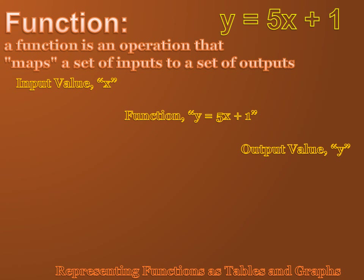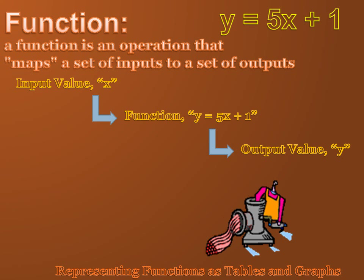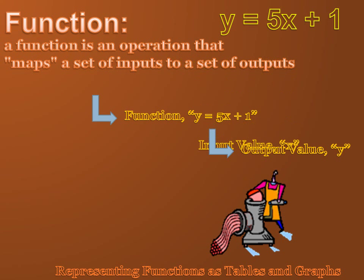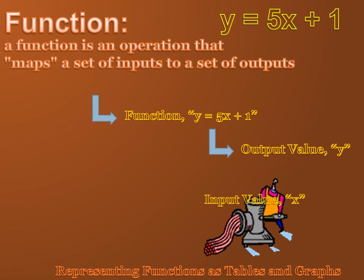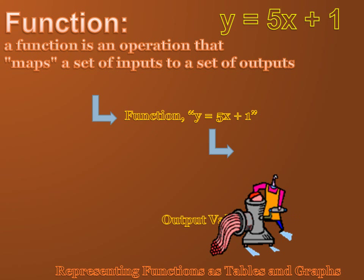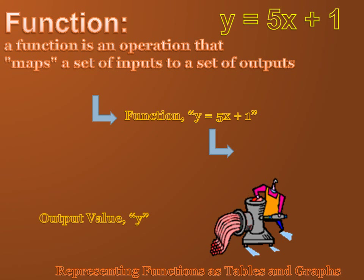A function is kind of like a machine. We have an input value, the x value, and we input that into the function. In this case, the function is y equals 5x plus 1. And the function grinds it up and spits it out into an output value, y. It converts an x value into a y value. It's a little bit like a meat grinder. We take the input value x and we shove it into the meat grinder, and the meat grinder does the function to x and spits out the y value or the output value.